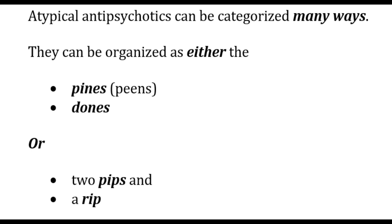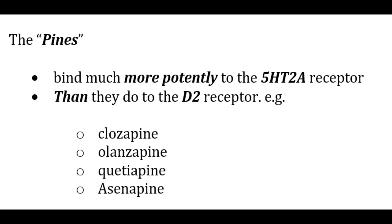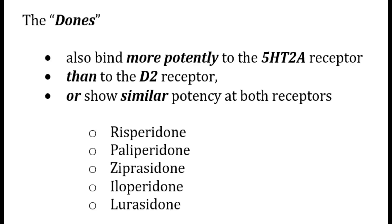Now, atypical antipsychotics can be categorized in many ways. They can be organized as either pines or dones, or as two pips and a rib. The pines bind more potently to the 5HT2A receptor than they do to D2 receptors. Examples being Clozapine, Olanzapine, Quetiapine, and Asenapine. The dones either have a similar receptor profile as the pines or show similar potency at both receptors.